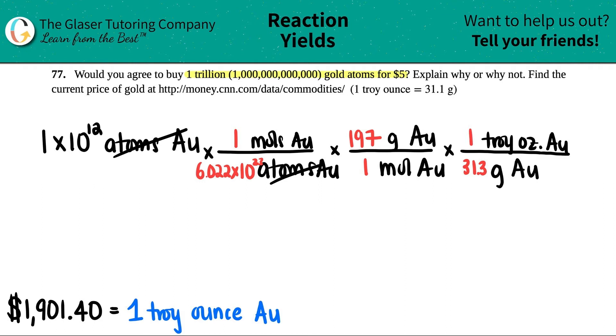All of these are cancelled and now let's see what my number is. I have 1 times 10 to the 12th divided by Avogadro's number, 6.022 times 10 to the 23rd. I'm going to multiply that by 197 and divide it by 31.1. I have 1.045 times 10 to the negative 11th troy ounce of gold.